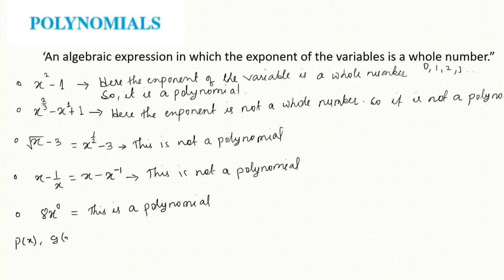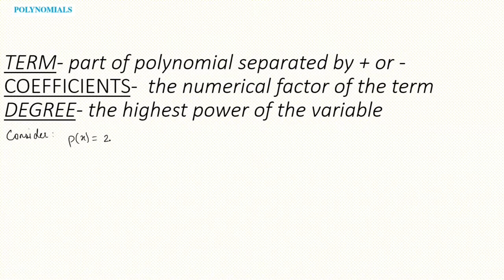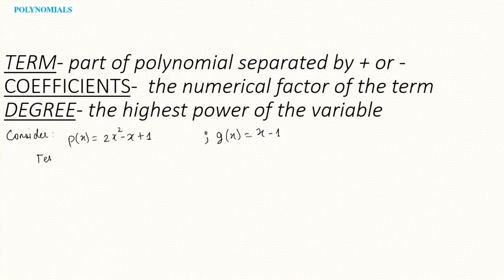So a polynomial p(x) is an algebraic expression. Now let's understand the terms: coefficient and degree. Consider polynomial p(x) = 2x² minus x plus 1, and q(x) = x minus 1. The parts separated by plus or minus signs are called terms. So p(x) has three terms, and q(x) has two terms.